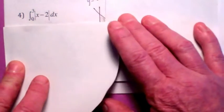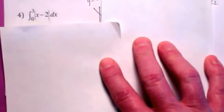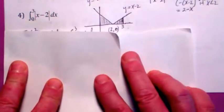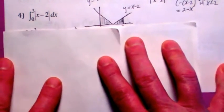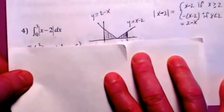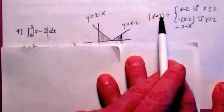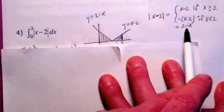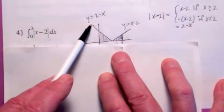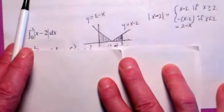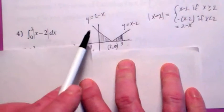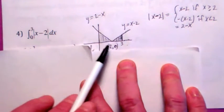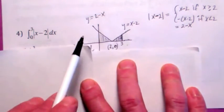I want to compute the definite integral from 0 to 3 of the absolute value of x minus 2. That's not one of our anti-differentiation rules — we don't know how to find the antiderivative of absolute value of x minus 2. But the absolute value of x minus 2 is just a piecewise function. It equals x minus 2 if x is greater than 2, and 2 minus x if x is less than 2. So what would the definite integral be from 0 to 3? It's just the area under the curve — let's do it algebraically.